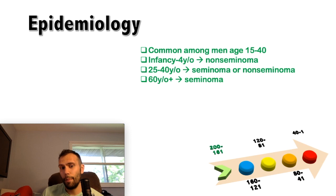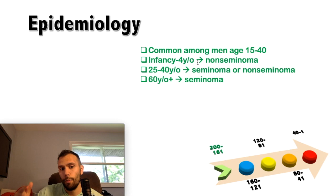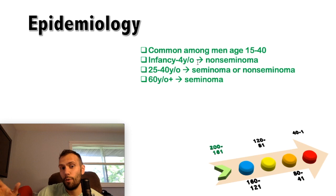Testicular tumors generally appear between ages 15 and 40, but there are notable peaks outside this range. Between infancy and four years old, the highest incidence involves teratomas and yolk sac tumors—both non-seminomas. Between 25 and 40, both seminomatous and non-seminomatous tumors are common. Over age 60, there is a higher incidence of spermatocytic seminoma, but the most important entity to remember is non-Hodgkin's lymphoma.